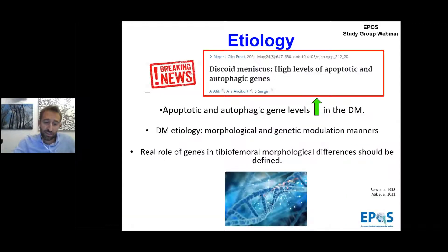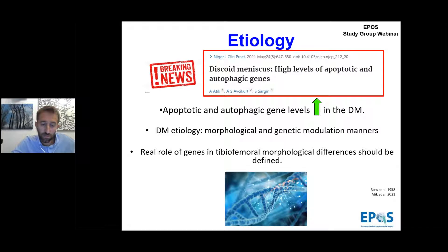Recently, morphological changes in terms of gene expression were identified; interestingly, apoptotic and autophagic gene levels are increased in discoid meniscus. We can state that discoid meniscus should be considered in both morphological and genetic modulation terms, but the real role of these genes still needs to be defined.